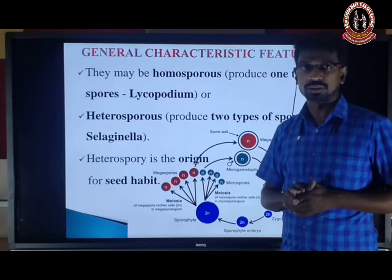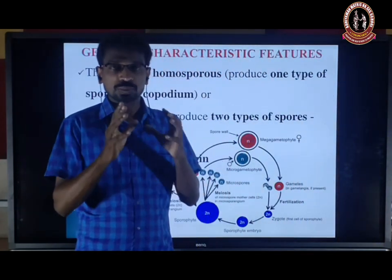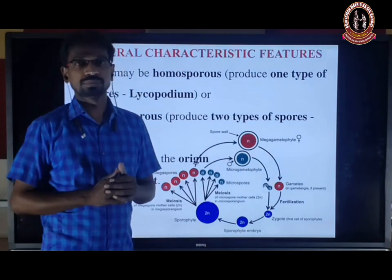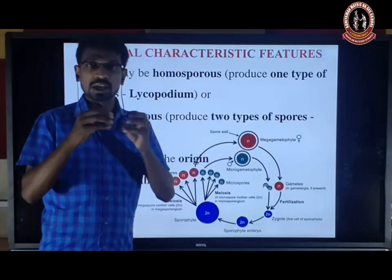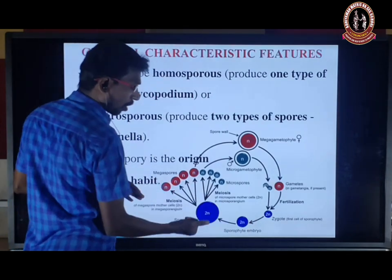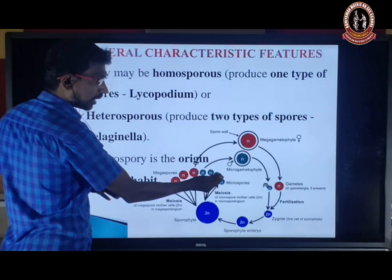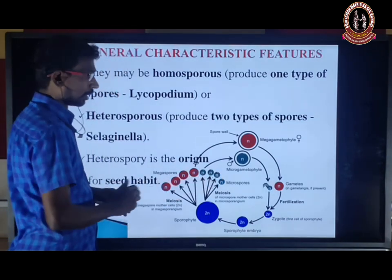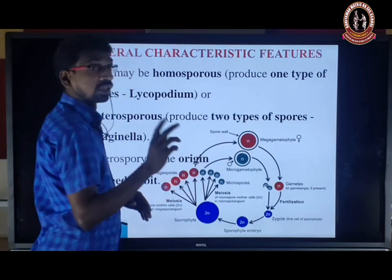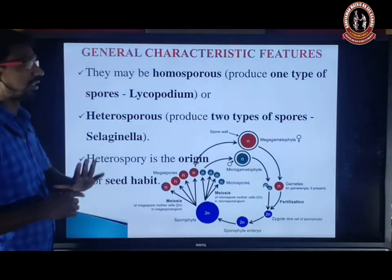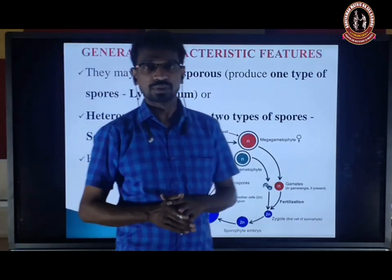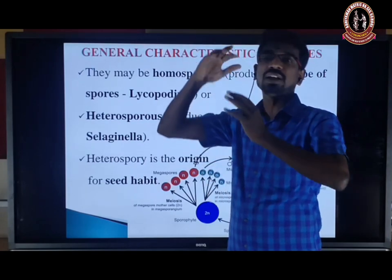Spores may be homosporous or heterosporous. In homospory, spores are similar in form — only one type of spore, for example Dryopteris. In heterospory, two types of spores are formed: one is small (microspore) and another is large (megaspore). Each develops into a corresponding gametophyte — megagametophyte (female) and microgametophyte (male). Example: Selaginella produces two types of spores. Heterospory is the origin of the seed habit — very important.